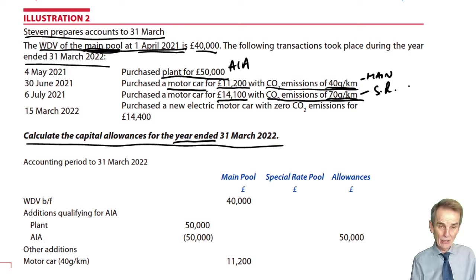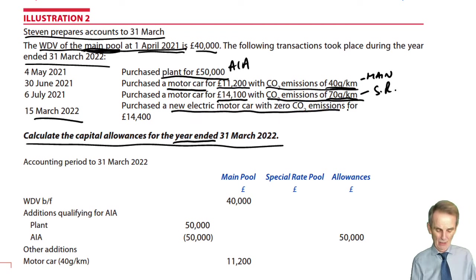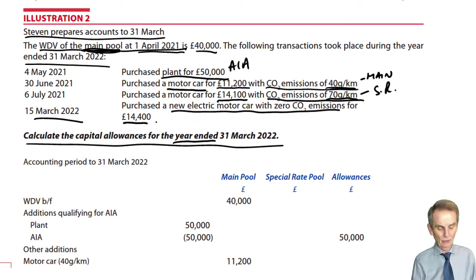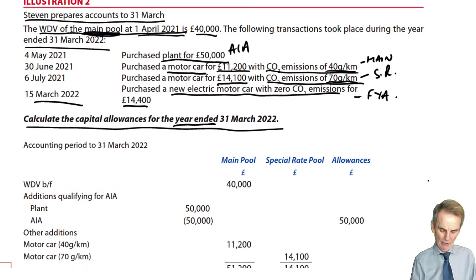Then to finish, on 15th March 2022, just before our year end, we purchased a new electric motor car with zero CO2 emissions, costing £14,400. Zero CO2 emissions on our new electric car means we've got a first year allowance.